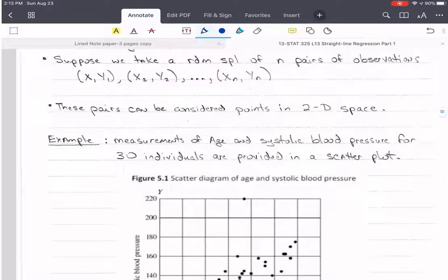Now, we're going to take a random sample of n pairs of observations. These values are paired with each other. Let's say this is a person. So we might measure their age and their blood pressure, and the input and output are both measured on the same person. So we have these paired observations.